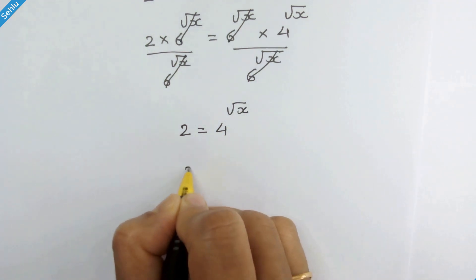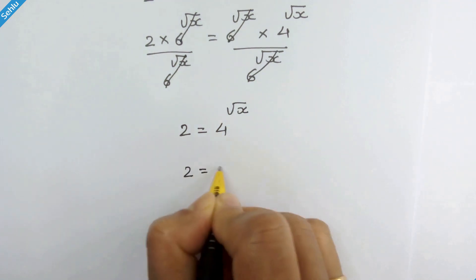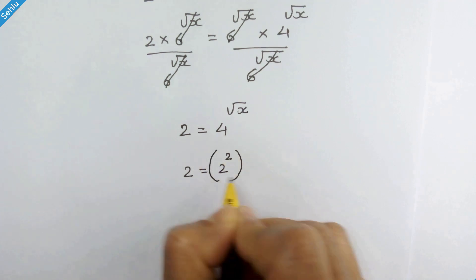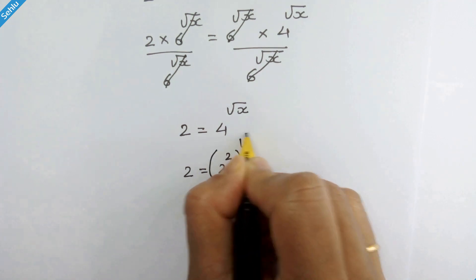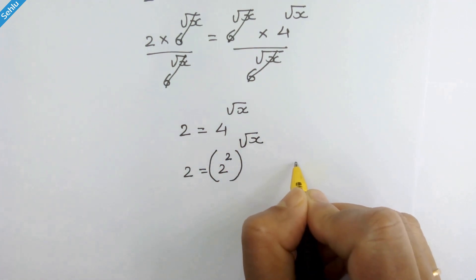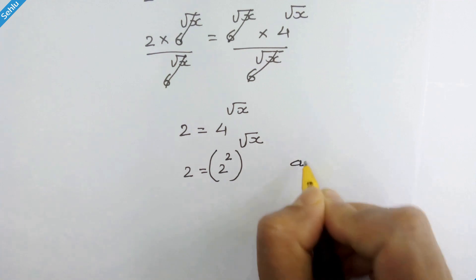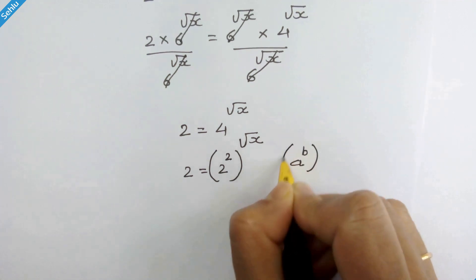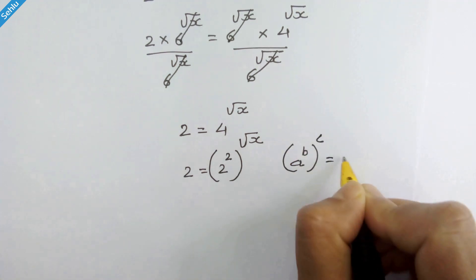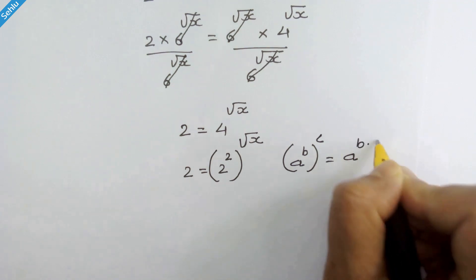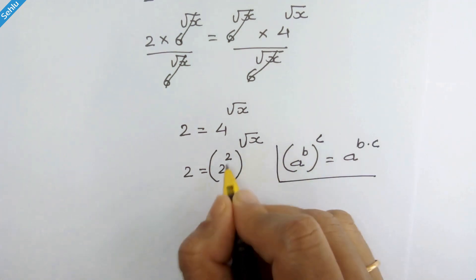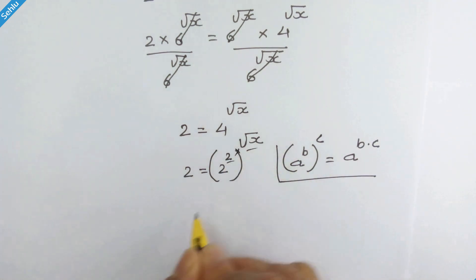4 can be written as 2 squared, whole raised to square root of x. Let's recall this rule: if we have a raised to b, whole raised to c, then it can be written as a raised to b times c. According to this rule we can multiply the exponents.